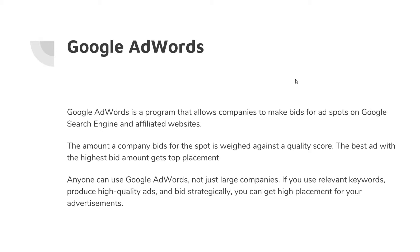Google AdWords is a program. It allows companies to make bids for ad spots on the Google search engine and affiliated websites — basically any website that's indexed through Google search engine. The amount that a company bids for each spot is weighed against a quality score. If the advertisement is of high quality, it gets a better quality score, and the best ad with the highest bid amount gets top placement on that website or in the search engine results.